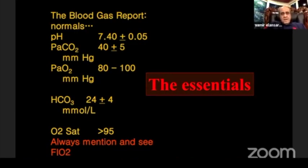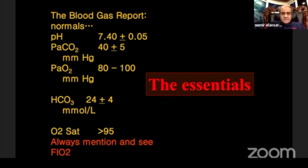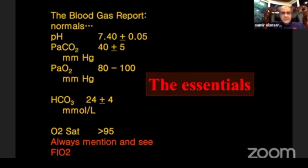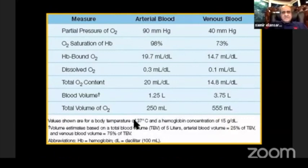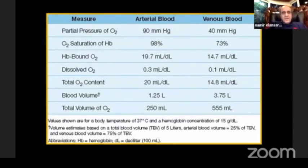Which is the ABG interpretation. We have to take an idea about what is running inside the patients — what is the pH, the carbon dioxide tension, arterial oxygenation, and the concentration of bicarb. First I want to run faster and remind you of the oxygen indices and what you must know about ABG — the basic ABG parameters.